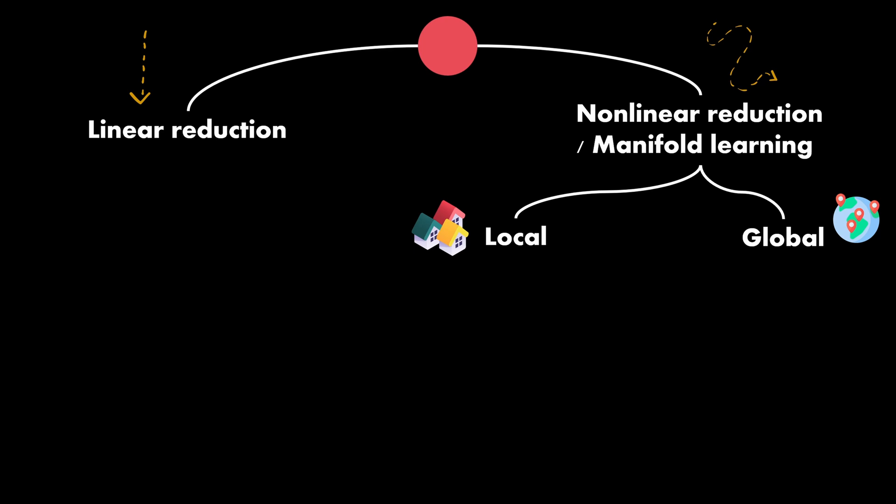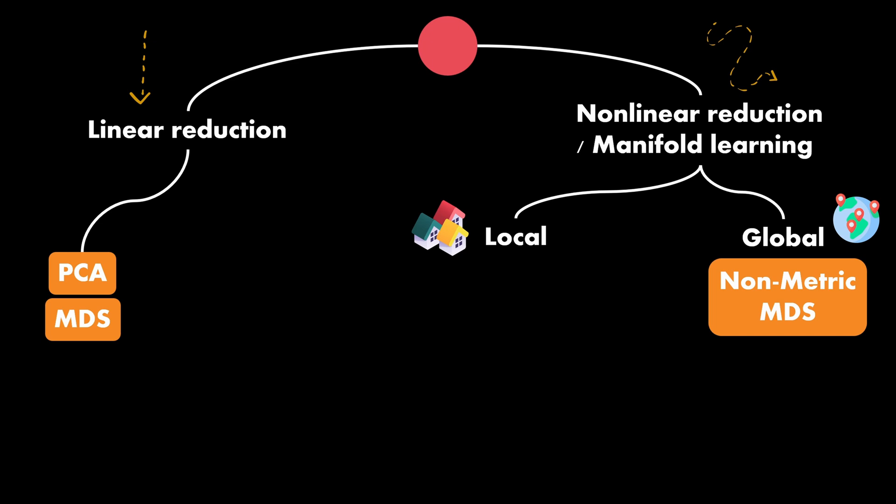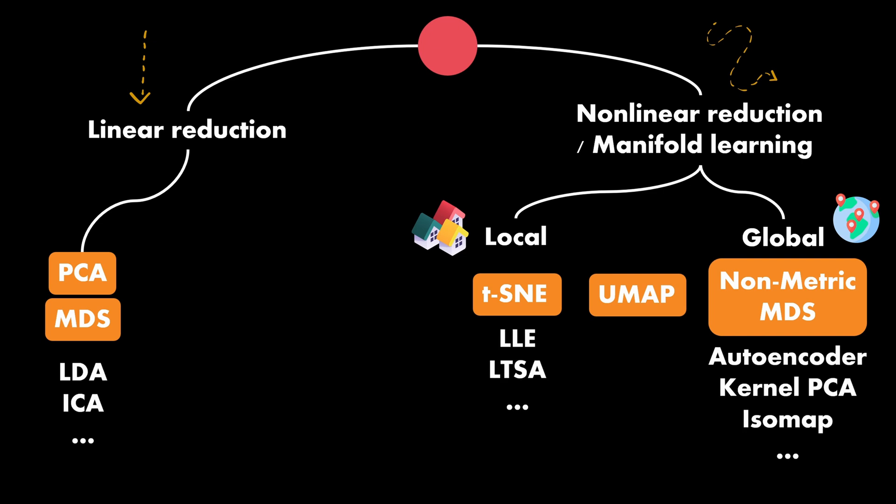A classical example of linear methods we will talk about is the principal component analysis. Most of you are probably familiar with it. Then we will also talk about the linear variant of multidimensional scaling, called metric MDS. A global technique considered in this series is the non-linear variant of MDS, called non-metric MDS. As a local manifold learning approach, we will look at the popular T-SNE. And lastly, we will discuss UMAP, a method that can be considered to fall somewhere between local and global approaches. Besides the ones mentioned here, there are of course plenty of others, which would however extend the scope of this series. This also includes neural network-based techniques like auto-encoders. Again, this is just one way of grouping the techniques, and hopefully this provides a rough overview.